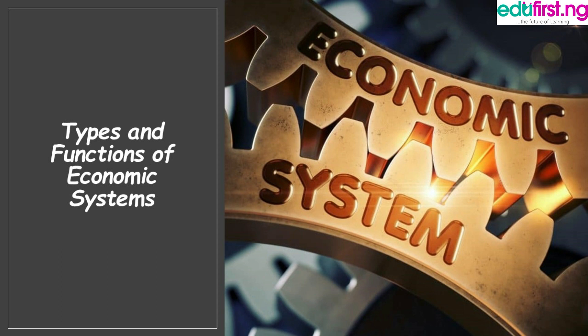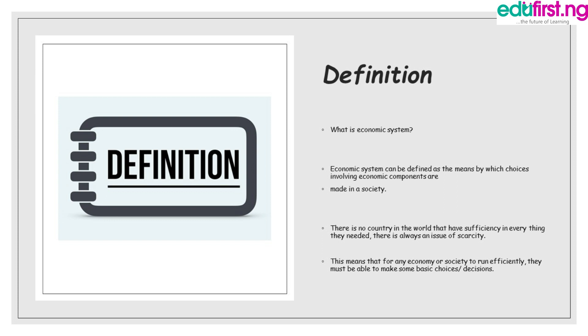Good day everyone. Today we are going to consider an important topic in economics titled 'Types and Functions of Economic System.' If I may ask, what is an economic system? An economic system can be defined as a means by which choices involving economic components are made in the society.